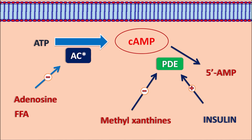Cyclic AMP plays an important role in lipolysis where it activates protein kinase A, which further activates hormone sensitive lipase enzymes. Mediators like epinephrine, norepinephrine, and glucagon can increase lipolysis, whereas insulin can inhibit lipolysis. Similarly, adenosine can control adenylyl cyclase activity, and free fatty acids can also produce auto-inhibition to control lipolysis. A few drugs like methylxanthines can inhibit the phosphodiesterase enzyme, which increases cyclic AMP activity resulting in increased lipolysis. So that's about the role of cyclic AMP in the conversion of triglycerides into free fatty acids.